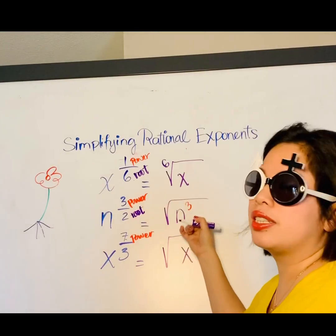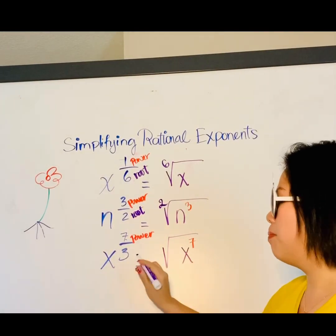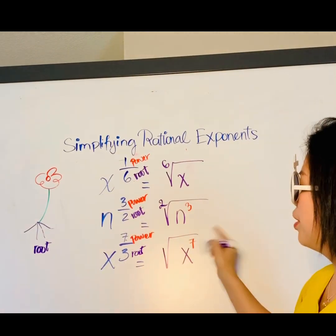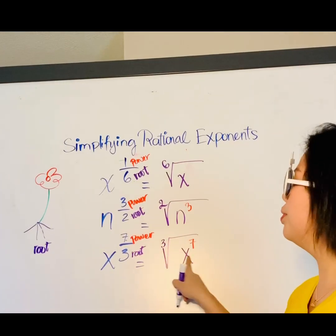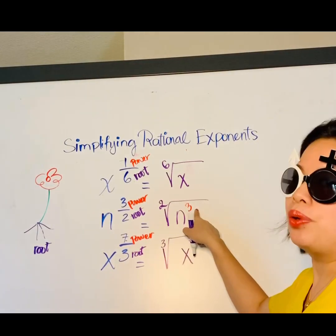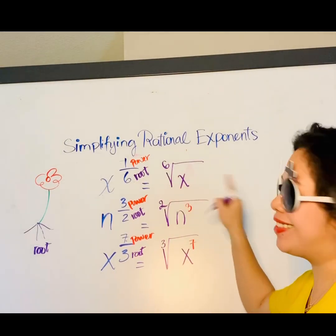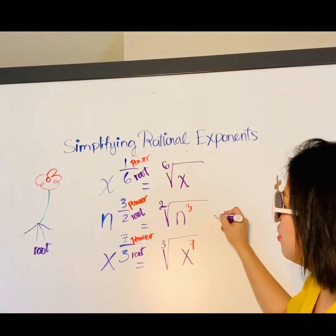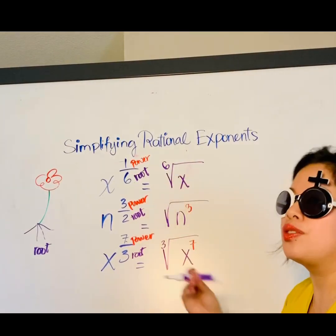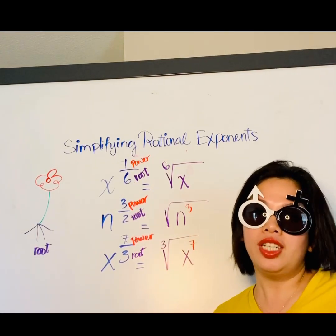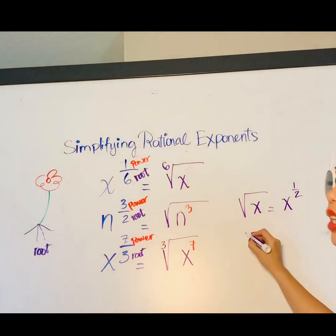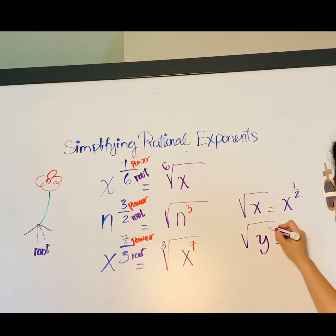So the bottom number becomes the root outside the radical, and the power goes inside. This gives us the cube root of x to the power seven, the square root of n to the power three, and the sixth root of x. For the second example, when you have a two as the root, we recognize that as a square root — so you don't need to write the two explicitly. If nothing is written outside, the root is understood to be two.